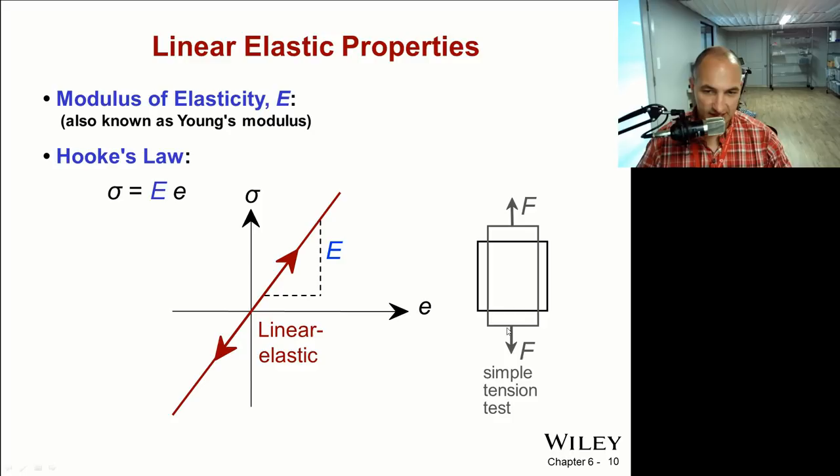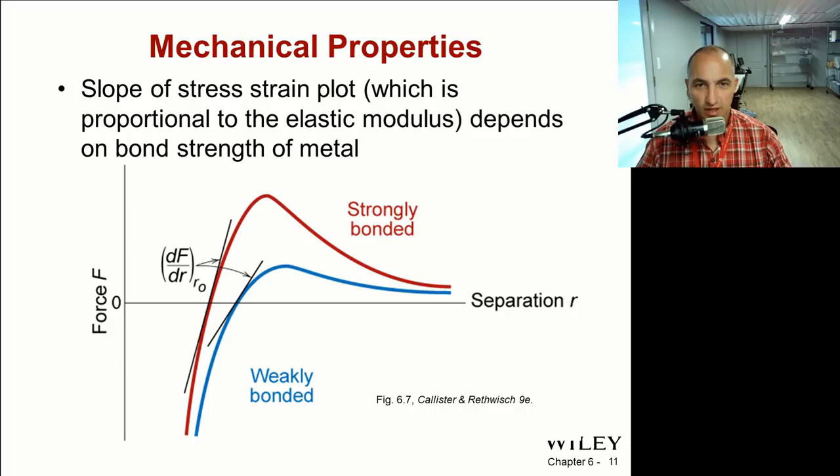The elastic modulus is proportional to bond strength in metals. The slope, a steeper slope is going to have a higher elastic modulus. Remember it's the stress over the strain, so a higher change in stress over a smaller change in strain for the red line here. The blue line is going to be more weakly bonded where you have less of the stress for a given strain of separation.